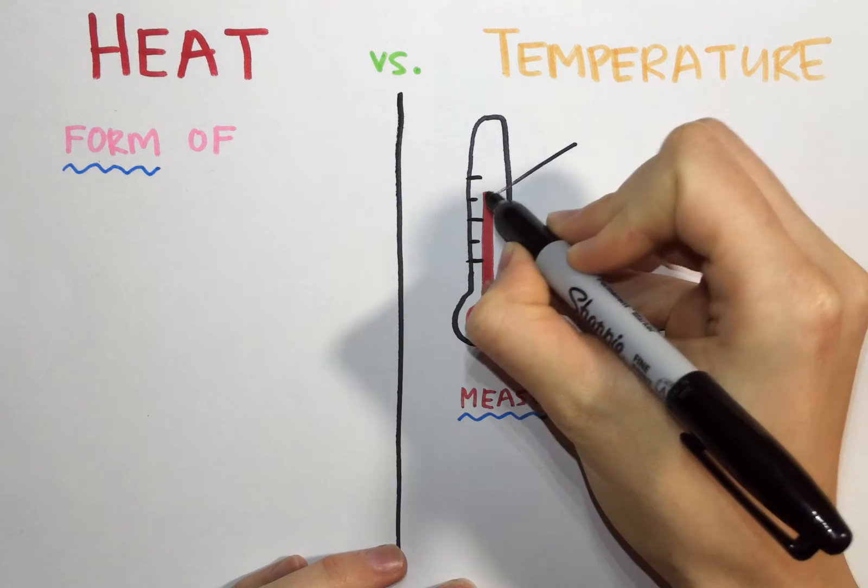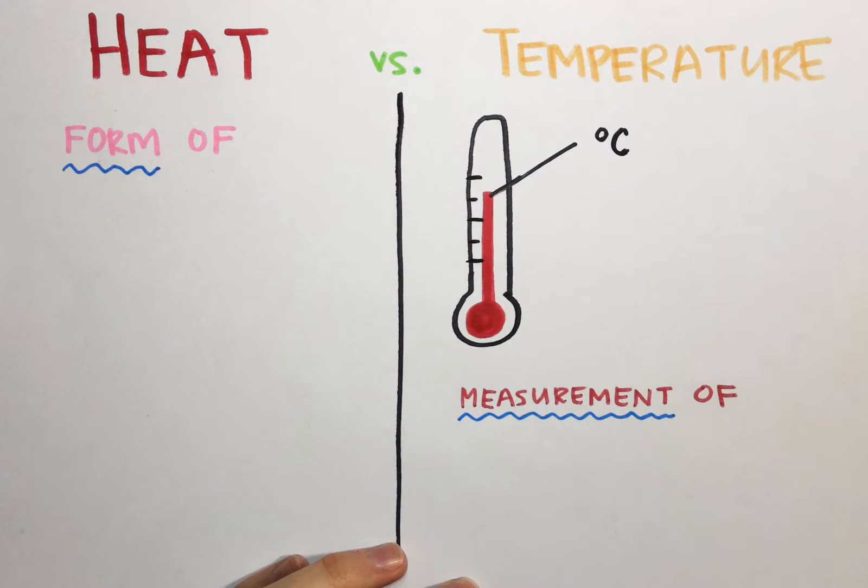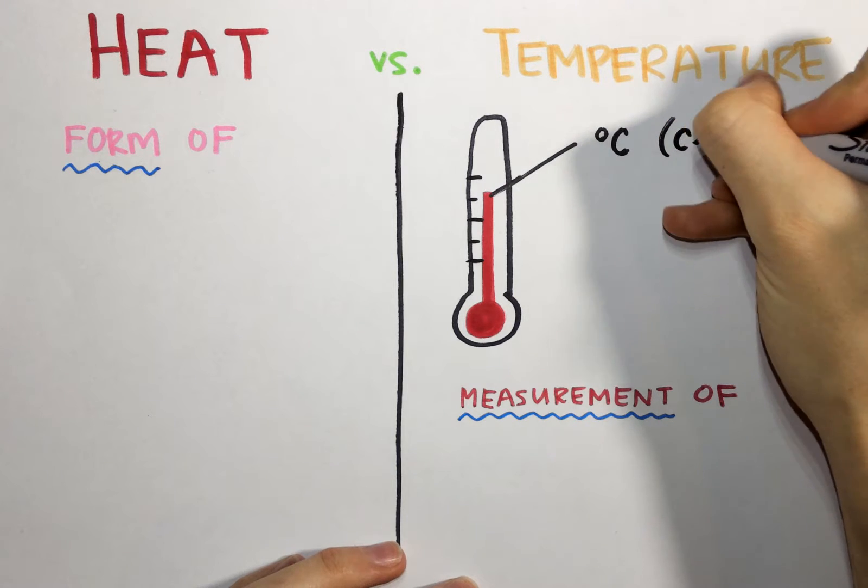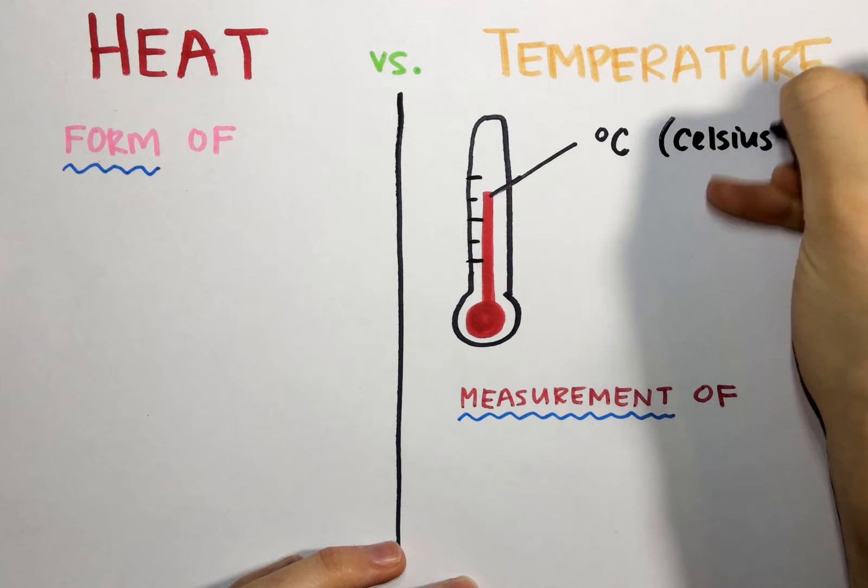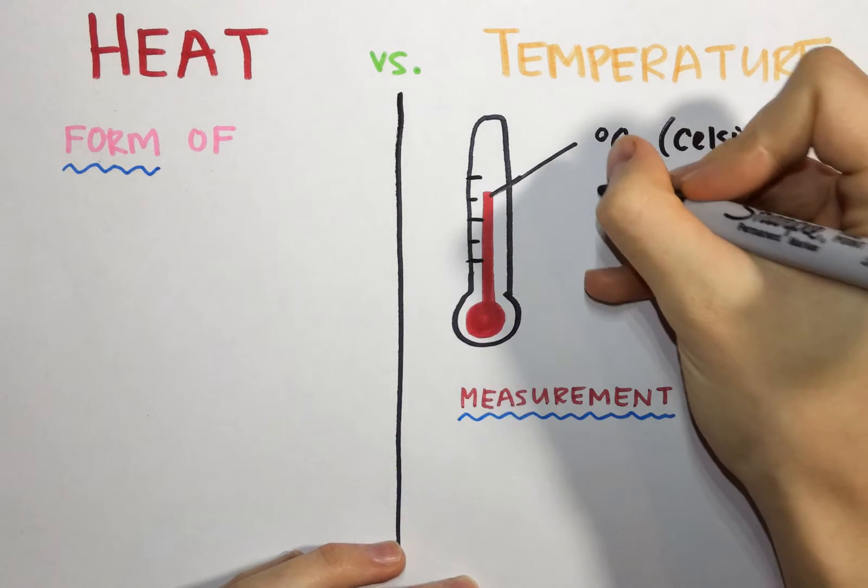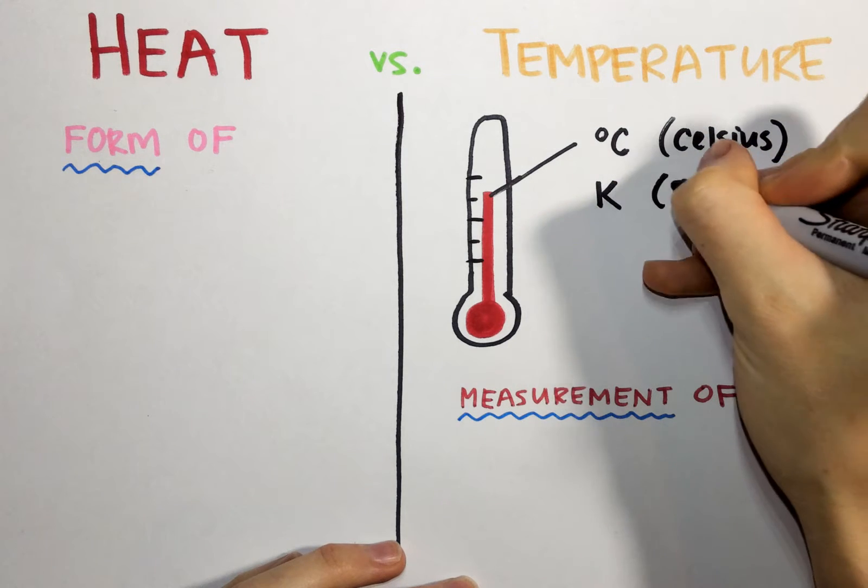And in science, in chemistry in particular, that measurement is either going to be in degrees C, that is to say Celsius, or that measurement will be in K or Kelvin.